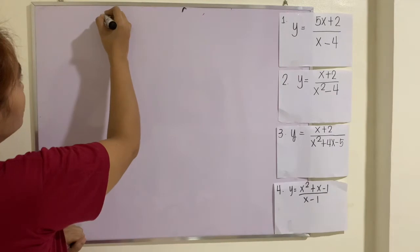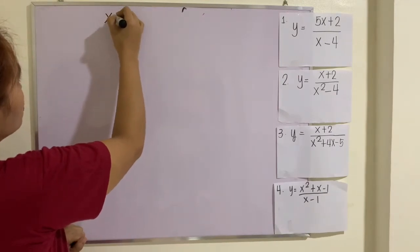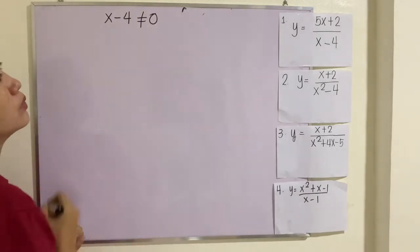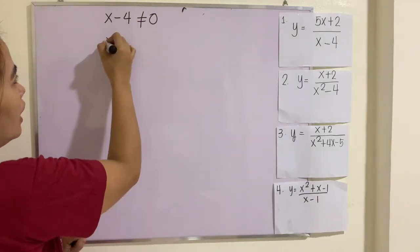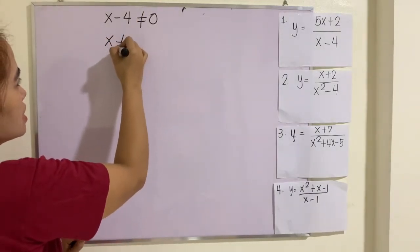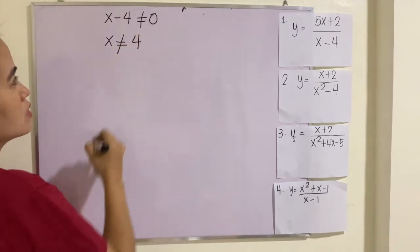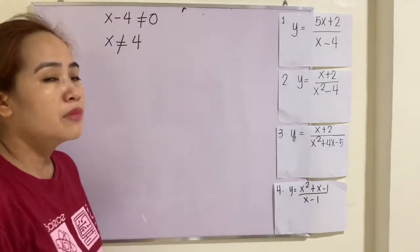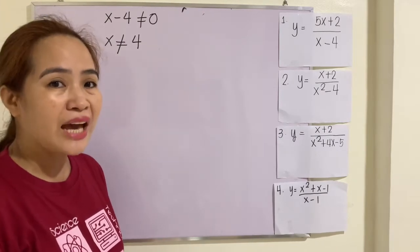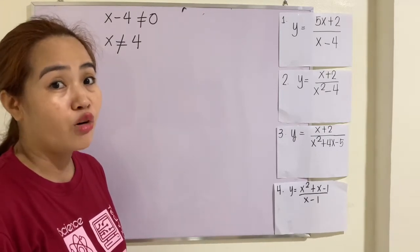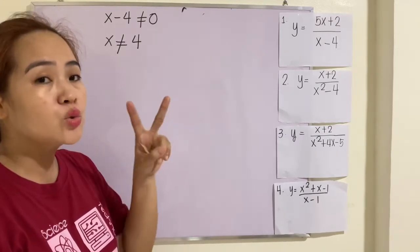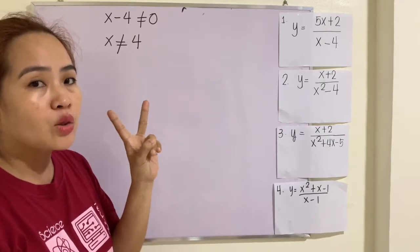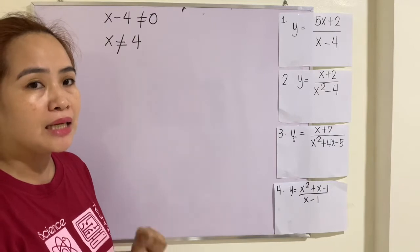To find the domain of a rational function, you just set the denominator not equal to 0, and then you solve for x. x is not equal to 4, because 0 plus 4 is 4. Remember that domain is the set of all x's, and range is the set of all y's. There are two ways in writing them: in set notation or in interval notation.